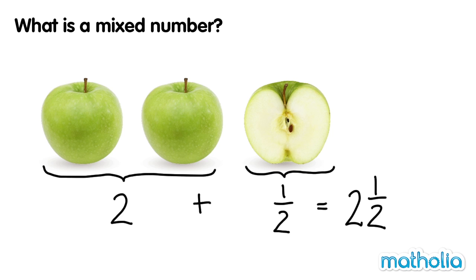A number that is made up of a whole number and a fraction is called a mixed number. Two and a half is a mixed number.